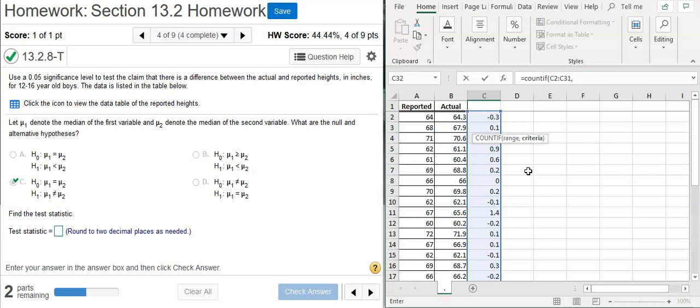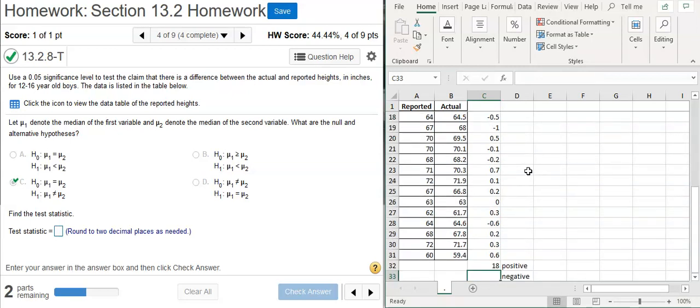Now it's asking for the criteria. Typically we put the criteria in quotation marks and we want these to be positive numbers, that's going to be greater than zero. And I close my parentheses and now there's my formula. I hit enter and it automatically counted all the positive numbers for me. I'm going to do the same thing with the negative numbers so we can get a quick count of them.